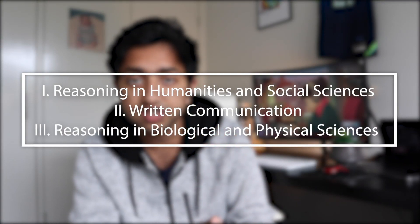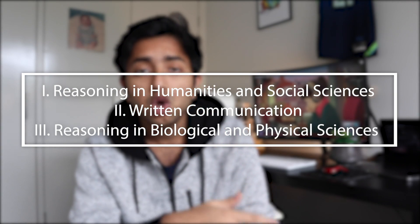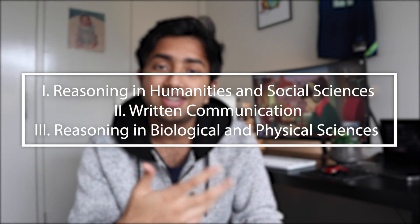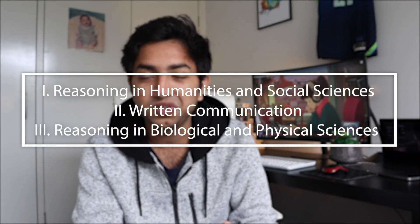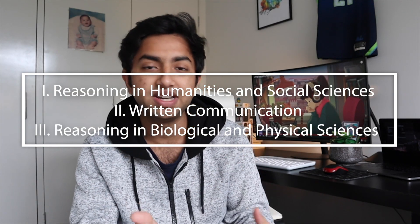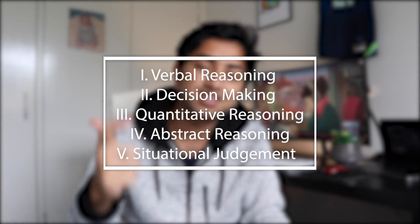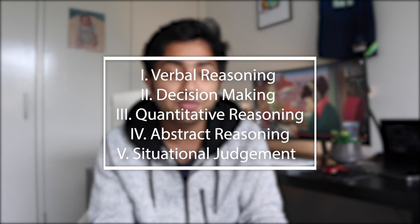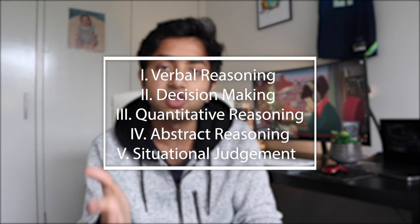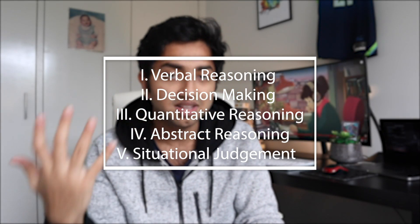In terms of the GAMSAT, it has three sections. You've got Section 1 which is a comprehension section, Section 2 which is a written essay section, and Section 3 which is a logic science-based section. If you look at the UCAT exam, instead of three sections, the UCAT actually has five different sections: verbal reasoning, decision-making, quantitative reasoning, abstract reasoning, and a situational judgment subtest.